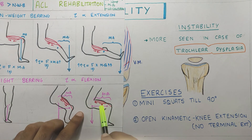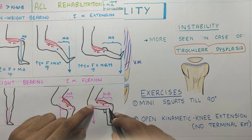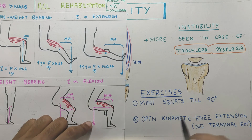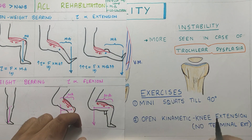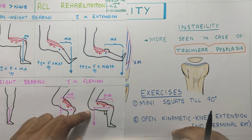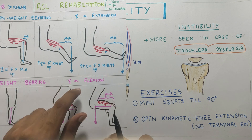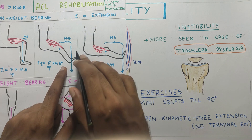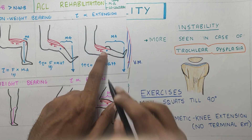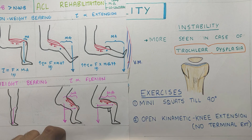During mini squats up to 90 degrees, the moment arm is larger so the quadriceps works hard, but you should not go below this range because the contact area of the patella with the femur becomes very small, increasing patellofemoral stress. In open kinematic chain exercises, where the foot is not in contact with the ground, you can give knee extension exercises, but you should not give terminal extension because the moment arm is very high at that point, causing very high patellofemoral stress.